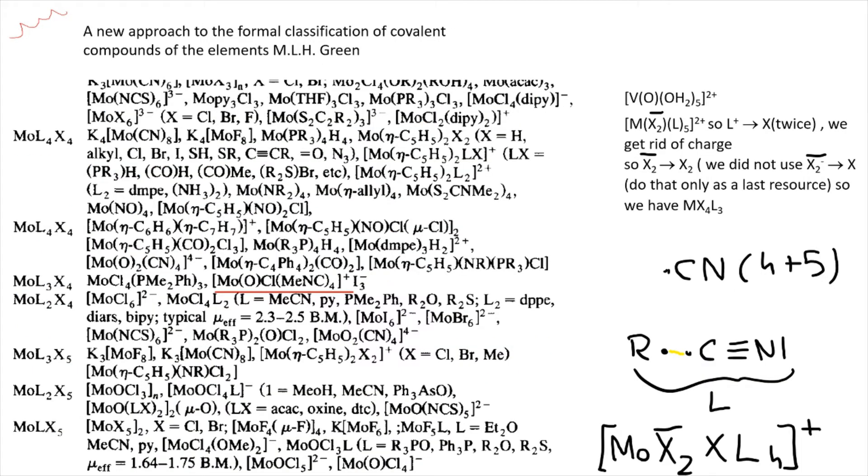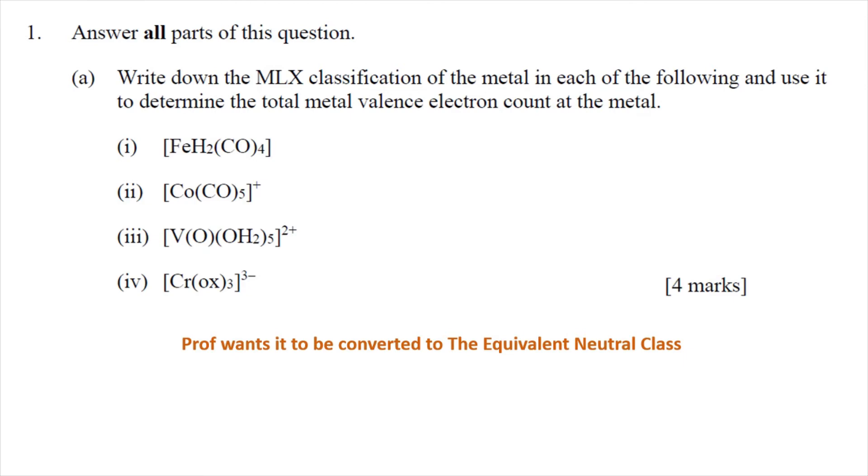I was doing these examples quite a while ago, and with the third example I was thinking, am I actually right? So I found this paper and there is a similar example. Basically we have metal X2 bar X and L4, and then L plus goes to X, giving metal L3 X4. This is just a brief reminder that you really need to know what your professor is demanding of you. In one past paper, it says convert the complex to MLX classification, but you're also required to change the charge to a neutral form, basically killing two birds with one stone.